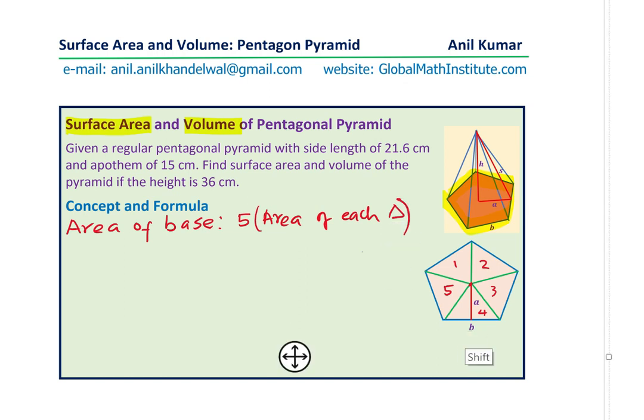Now area of the triangle, as you know, is half base into height. And that gives you the formula that area of the base is five times half of base B and the height being Apothem A. So that is how we get the area of the base.